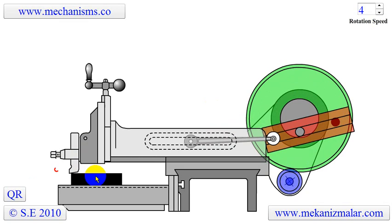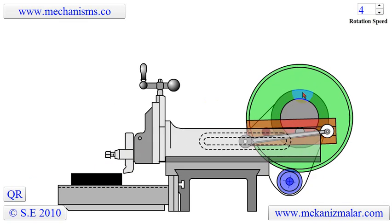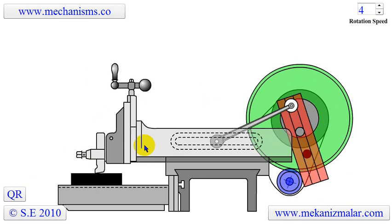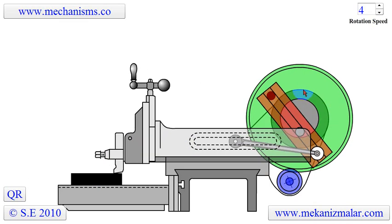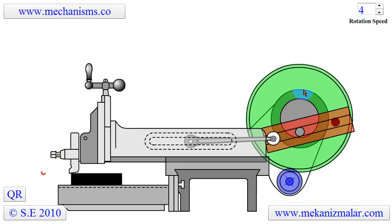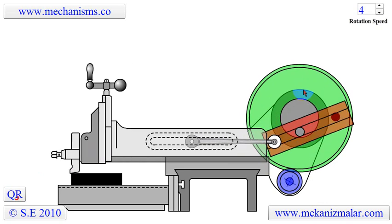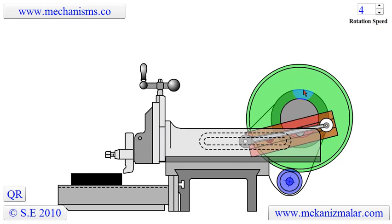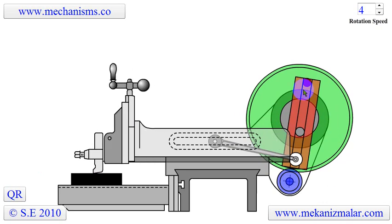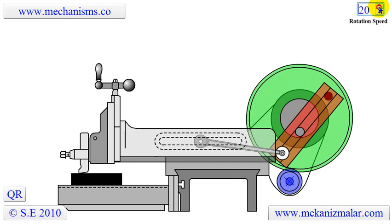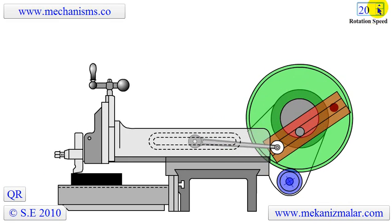The traversing head shaper uses the Whitworth quick return mechanism to drive the ram of the shaper. Since we have described the working principles of a Whitworth quick return mechanism in a previous video, we will not go into the details here. However, as a short reminder, the Whitworth quick return mechanism converts rotation motion to reciprocation motion, in which the forward stroke is slower than the backward stroke.